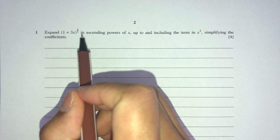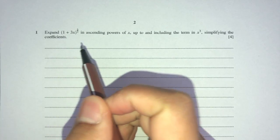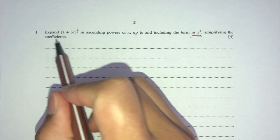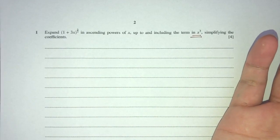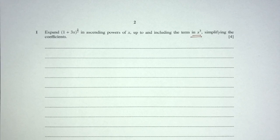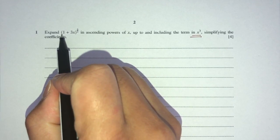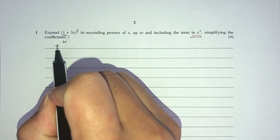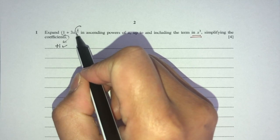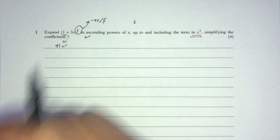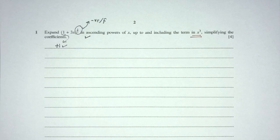Here we have to expand this expression in ascending powers of x up to x cubed. This is going to be a binomial expansion. It has to satisfy a few conditions before we can use the formula. First, this has to be plus one — confirmed. And the power has to be negative or a fraction — confirmed. So once we satisfy these two conditions, we can use the formula to expand this whole thing.